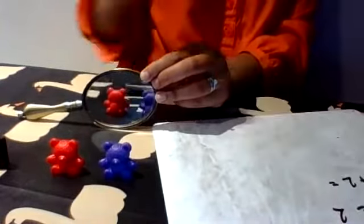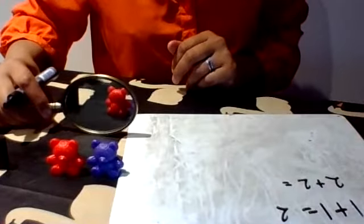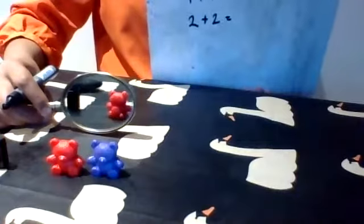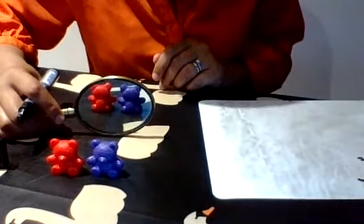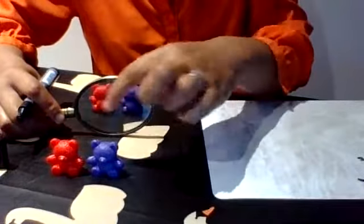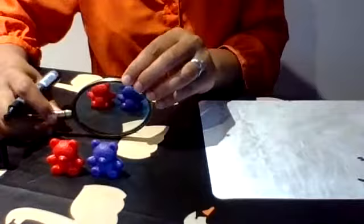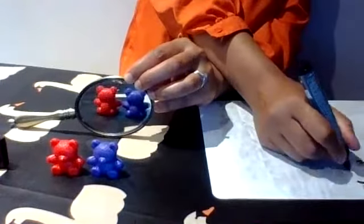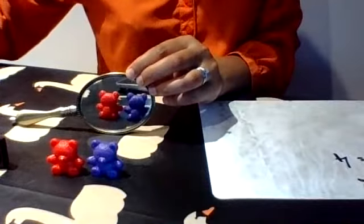So my number sentence reads two add two equals. If I turn it around you can see it's just there, two plus two equals. And now I'm going to count up all the teddy bears I can see, so I'm finding double two. One, two, three, four. So double two is four.